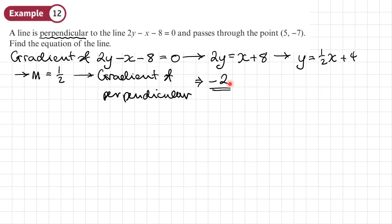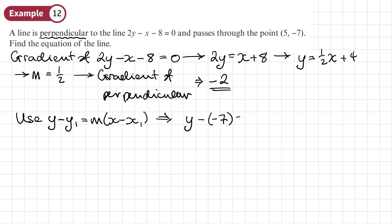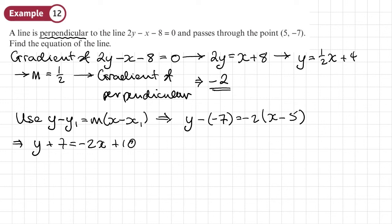I now have the gradient of the perpendicular line and the point it passes through. Using y minus y1 equals m times x minus x1, with y1 equals negative 7, m equals negative 2, and x1 equals 5, and expanding the brackets gives y plus 7 equals negative 2x plus 10. Leaving the answer in the form y equals mx plus c gives y equals negative 2x plus 3.